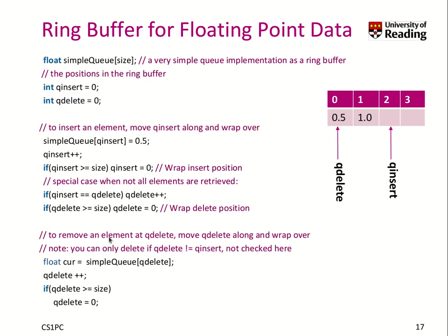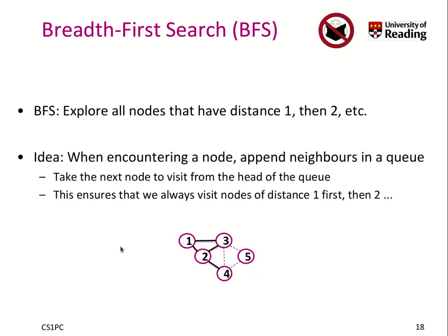How do we remove an element? We move the delete pointer along and wrap it over as well. We can retrieve the element by taking the value underneath the queue-delete pointer. So we would take 0.5, then move the queue-delete pointer to the next position, position one, and wrap it over again. That's a very lightweight implementation.